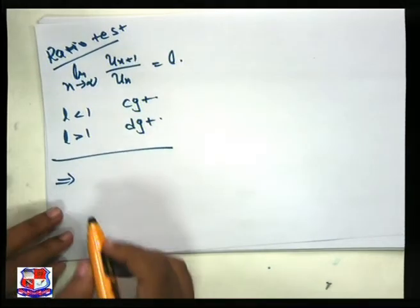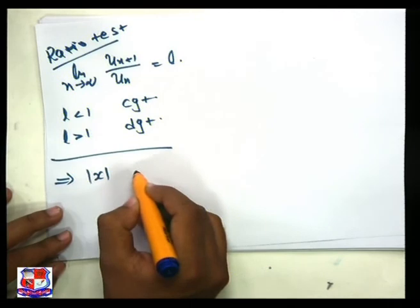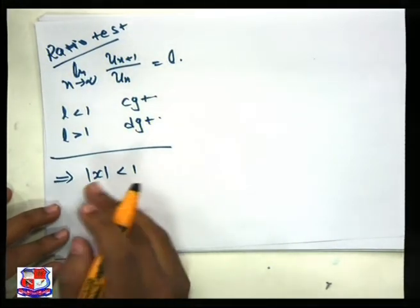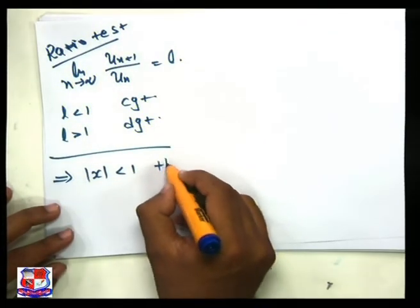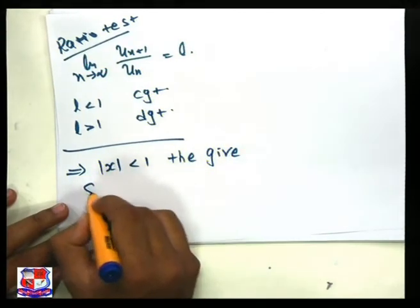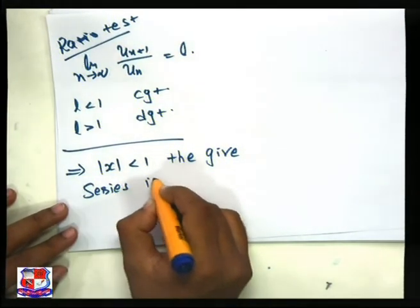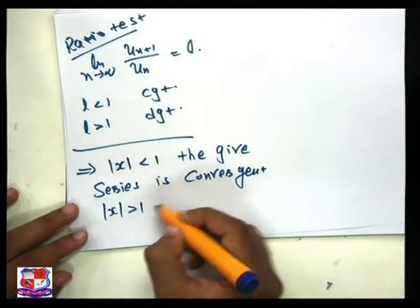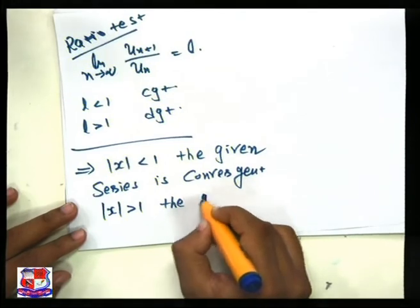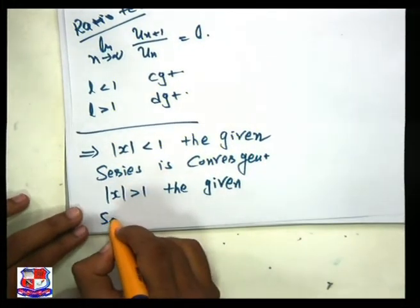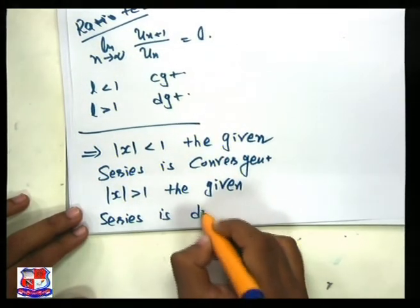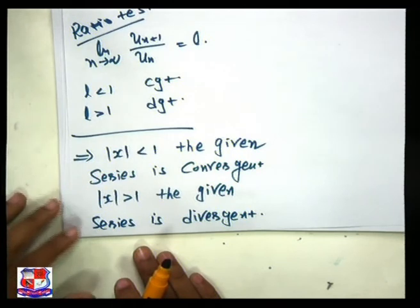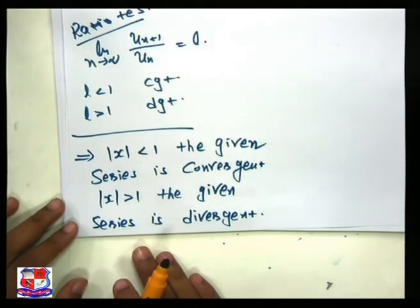Since |x²| < 1 is equivalent to |x| < 1 (taking square roots of both sides), the given series is convergent for |x| < 1 and divergent for |x| > 1. The remaining question is what happens when |x| = 1.